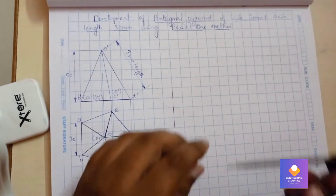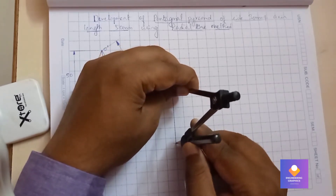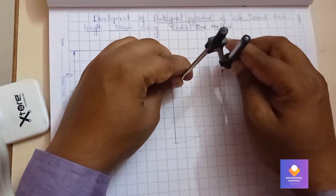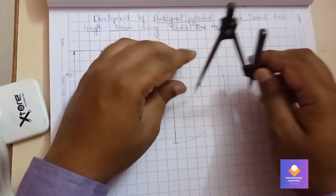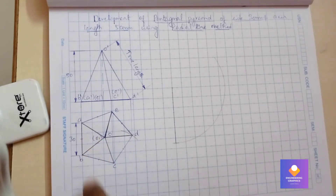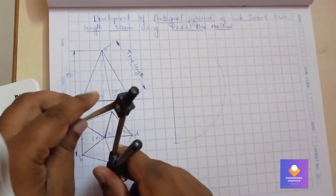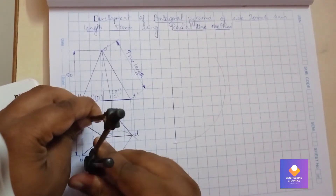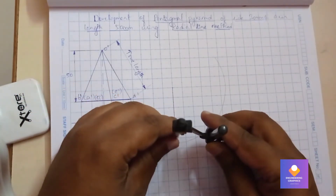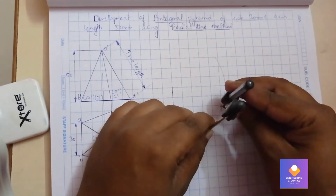Using a compass, I'll be measuring this true length and drawing a small thin arc line. After that, since each of the base edges is 30mm, I'll be measuring 30mm and cutting off five points along the arc — you can measure from any one of the edges.